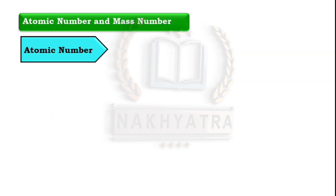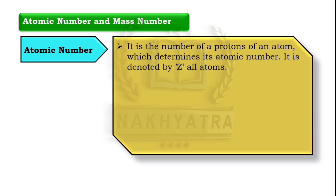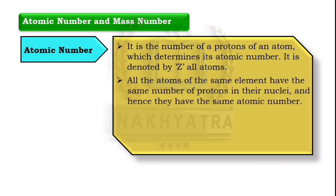Let us see the atomic number. It is the number of protons of an atom which determines its atomic number. It is denoted by Z. All atoms of the same element have the same number of protons in their nuclei and hence they have the same atomic number.